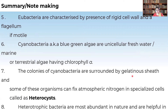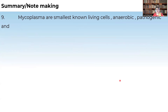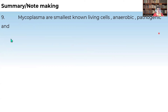Heterotrophic bacteria are most abundant in nature. They are helpful in forming curd and producing antibiotics. Bacteria with pathogenic effects cause diseases — cholera is caused by Vibrio cholerae, typhoid, and tetanus. Mycoplasma are the smallest known living cells, anaerobic in nature, and are pathogenic.